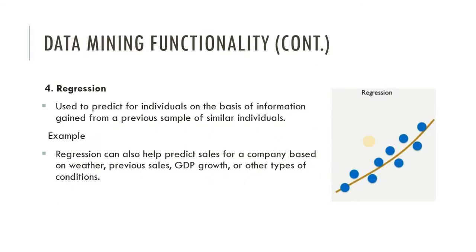The second data mining functionality is regression. We already know what classification is — in classification we divide data into particular classes or predict the class labels of unknown samples. But in regression, we predict values for individuals on the basis of information gained from previous samples of similar individuals. In regression, we predict the current or future value based on previous values — we analyze our previous data, draw conclusions, and based on that we predict our future. That is called regression.